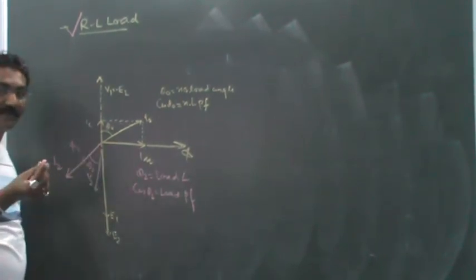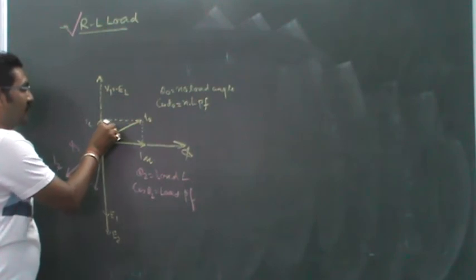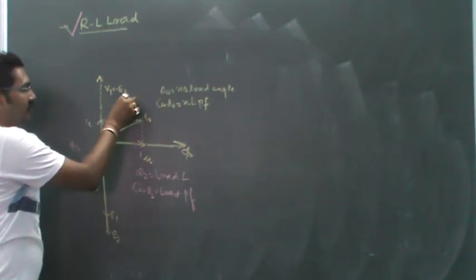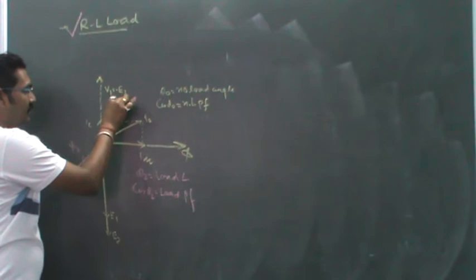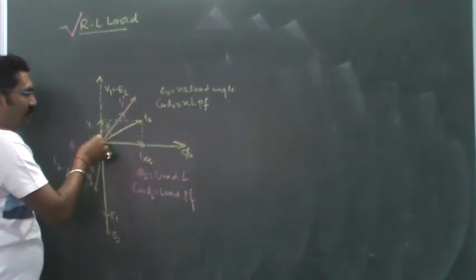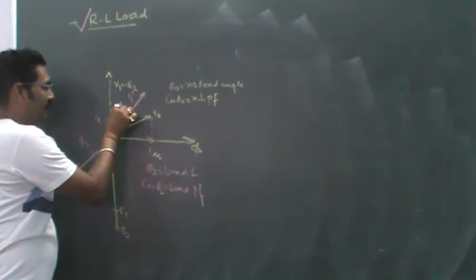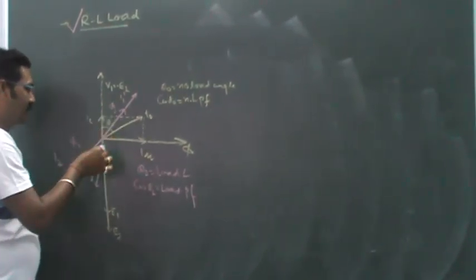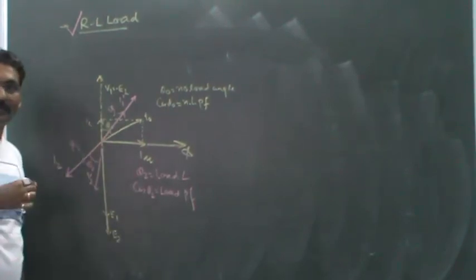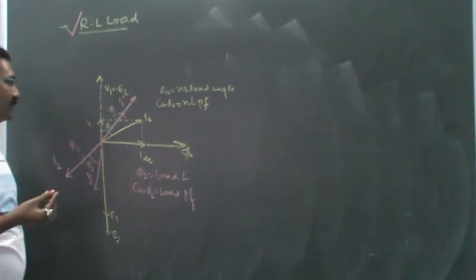So phi1 and phi2 can neutralize each other. This is I1' and the flux produced by this will be in proportion, so it's in phase—that is phi1. This phi1 and phi2 will be equal and opposite to each other, so they neutralize the effect of each other.